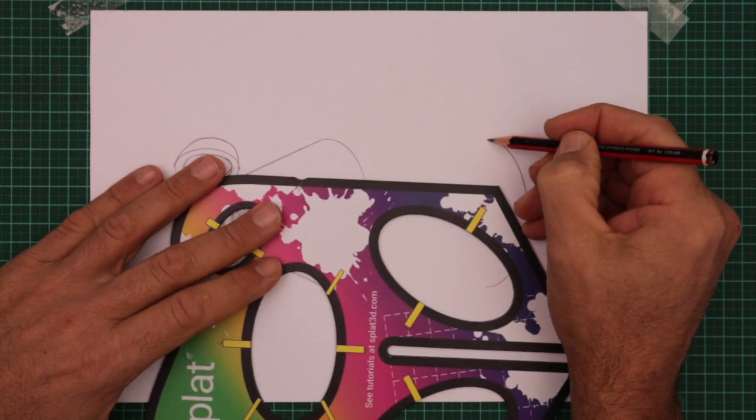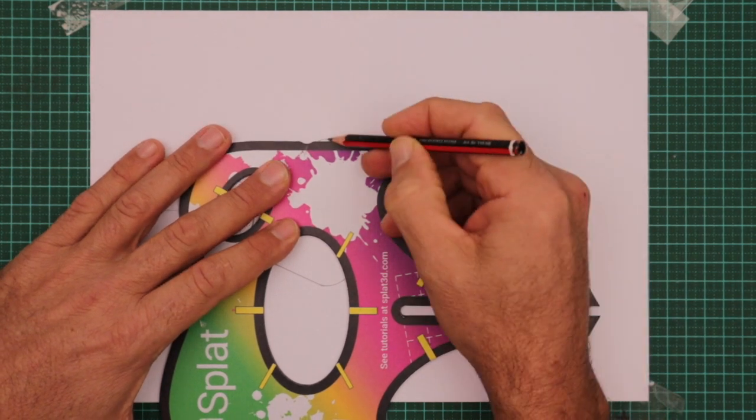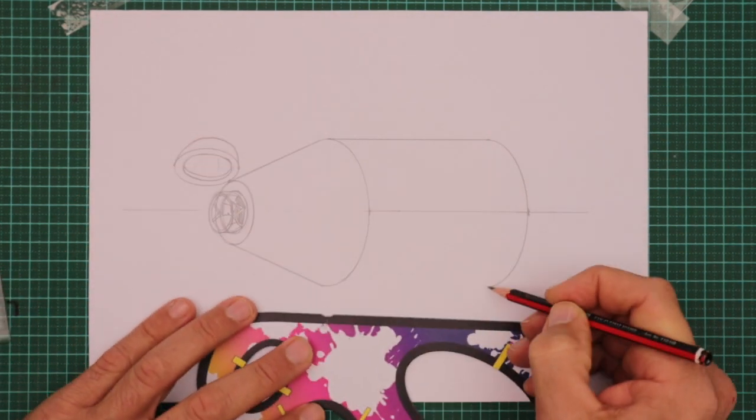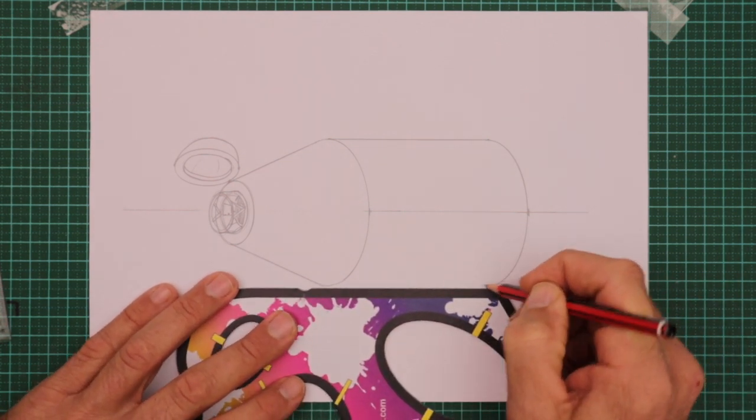I'm connecting that to the larger ellipse of the capsule. And we have a cylinder. When you finish this drawing and you know some basic shapes you can begin to design your own spacecraft.